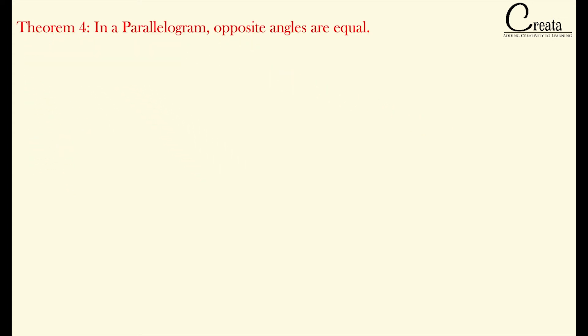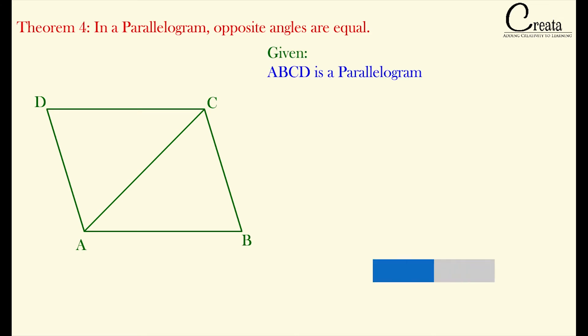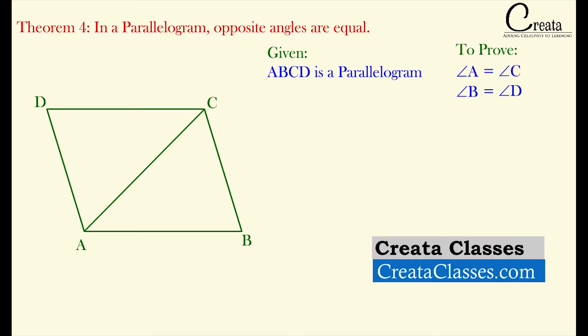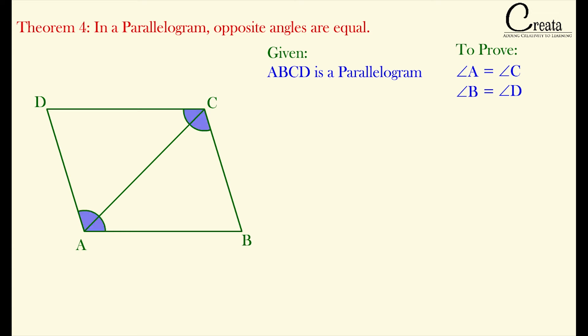Let's take our standard parallelogram ABCD. AC is the diagonal here. We have to prove the opposite angles are equal. That is, we have to prove angle A is equal to angle C and angle B is equal to angle D. Let's prove the same.